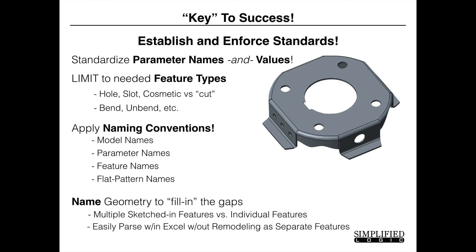Name geometry to kind of fill in the gaps. So if somebody models something as a sketched-in feature versus individual features like this surface could be, it's important that you come up with something that's parsable in Excel without remodeling the part into individual features. In this case, we've come up with a little schema that says we want the feature type, a unique identifier, and then the quantity of them that are involved for that feature, and then it's easy to pick up.